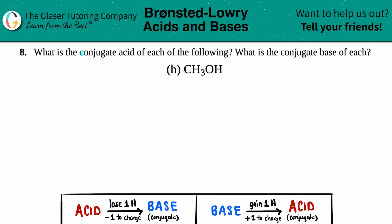Number eight: what is the conjugate acid of each of the following and what is the conjugate base of each? And then we have letter H. So we have to find the conjugate acid and the conjugate base of methanol, which is CH3OH.